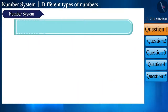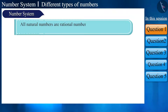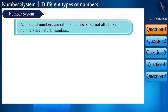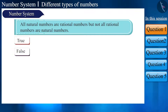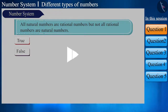All natural numbers are rational numbers, but not all rational numbers are natural numbers. State whether the given statement is correct or not. You can also pause the video to think about the answer.